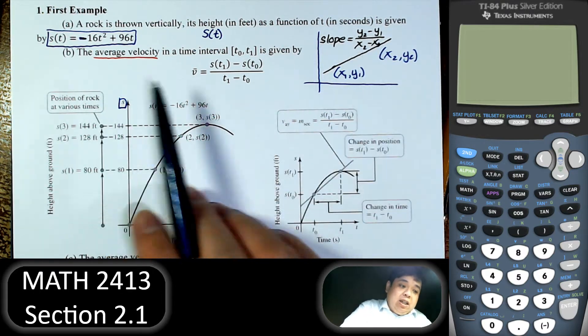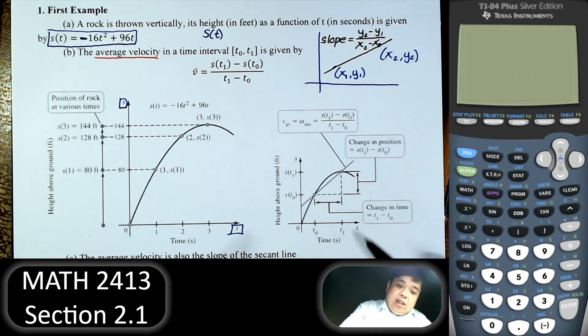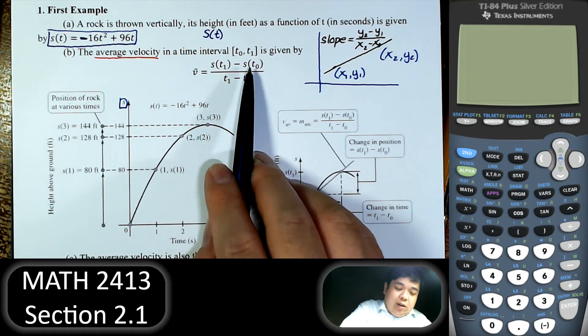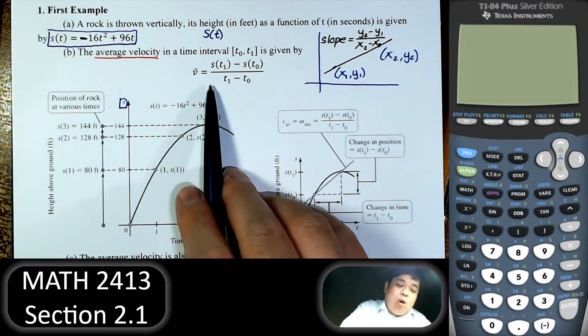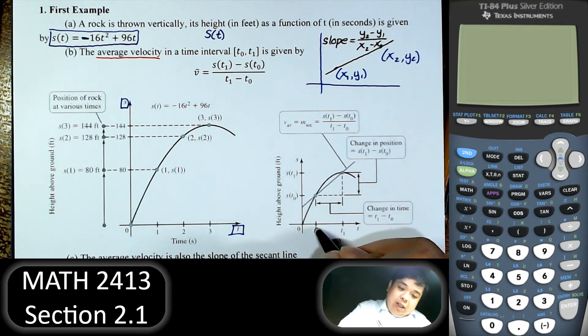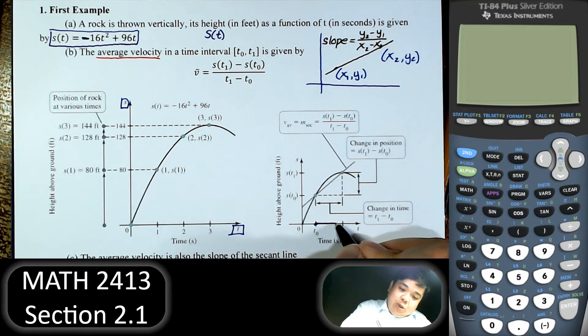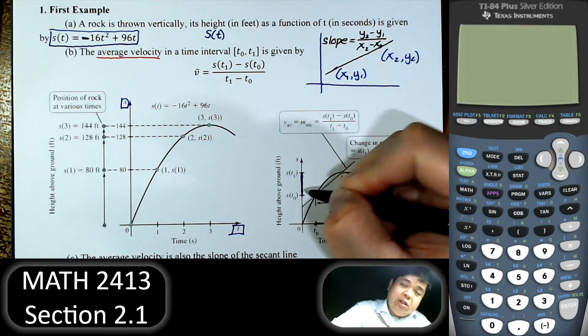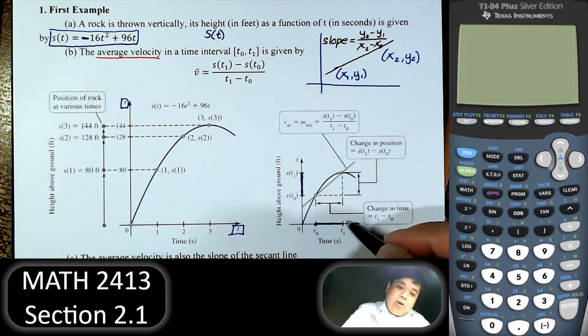So that's exactly what we have. Now the y is, in this case, the function of t. So we write s(t1) minus s(t0) over t1 minus t0. So we go from t0 to t1. This is the change in t. And we take the ratio of that.